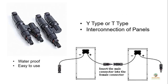There are also Y-type and T-type branch connectors, which are used for single input and two output applications, or for connecting panels in parallel. Since MC4 connectors are waterproof and dustproof, they are very easy to use. As shown in the image, you can connect panels in series by simply inserting the male connector into the female connector — it's that easy.